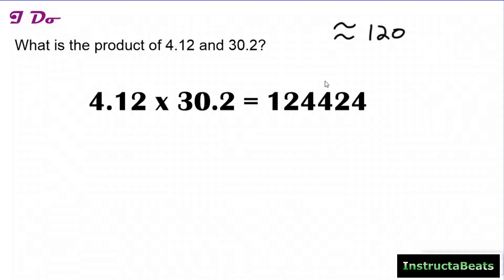If you want to learn how to multiply decimals with different strategies, check out our other playlist — we have how to multiply with the standard algorithm and how to do it with grids. Today we're just focused on: we'll give you the digits of your product and you're going to put your decimal in the most reasonable place. No matter what strategy your teacher is teaching you — grids, area models, partial products, or standard algorithm — this is always a great strategy to check to make sure your answer is correct.